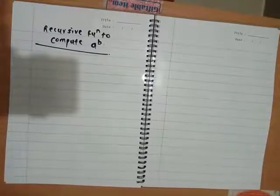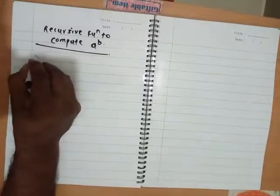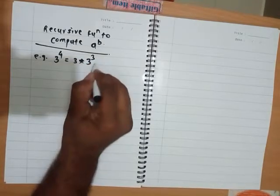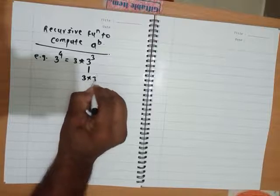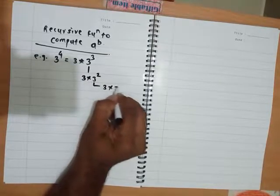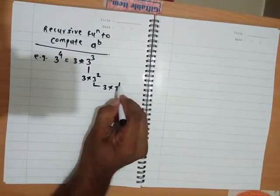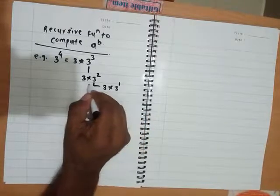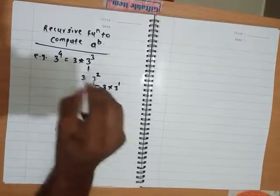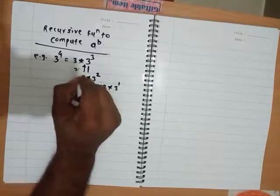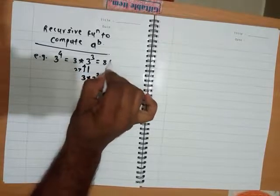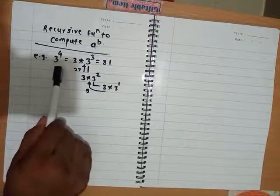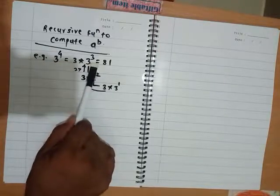Let's write a recursive function to compute a raised to b. For example, 3 raised to 4 is equal to 3 into 3 raised to 3. That 3 raised to 3 is equal to 3 into 3 squared. That 3 squared is equal to 3 into 3 raised to 1. Now when I have 3 raised to 1, I know the answer is 3. So there is a recursive pattern here — in order to compute 3 raised to 4, I need to know 3 raised to 3, and I can use the same function for that.